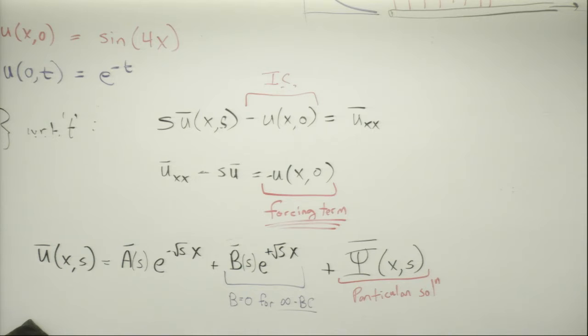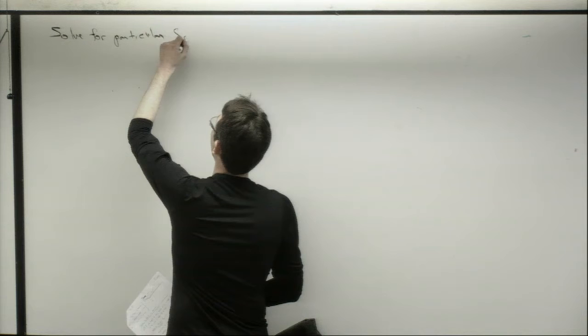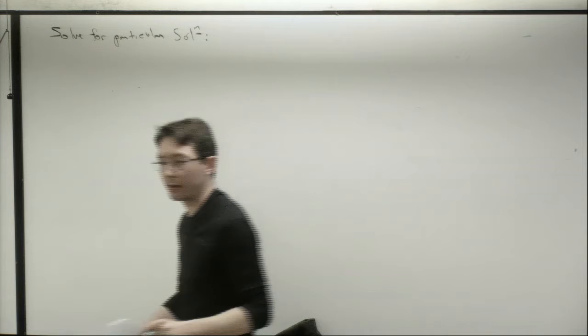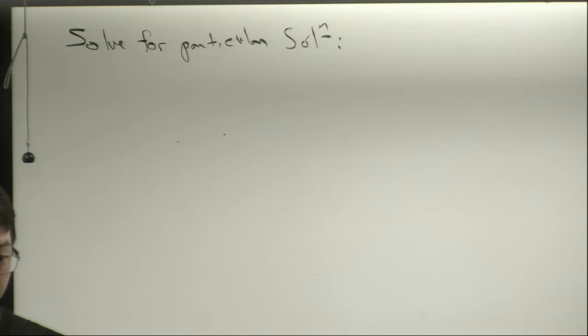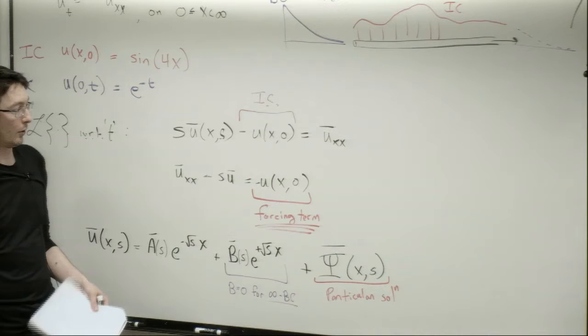Whenever I have an ODE with forcing, I solve it first for the homogeneous case, then for the particular case, and add them together. I'm going to solve the particular solution first. The particular solution is the solution due to forcing — due to the initial conditions. My initial conditions look like a sine function, so I need ψ_xx minus s·ψ equal to sin(4x). I'll guess that the particular solution involves sines and cosines.